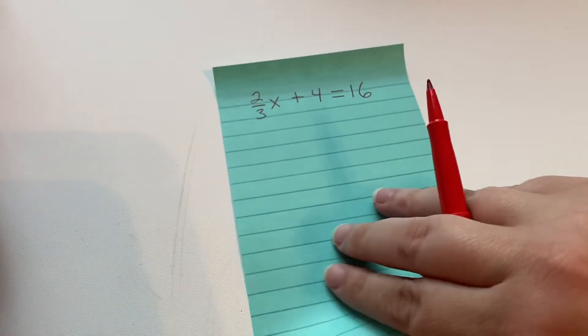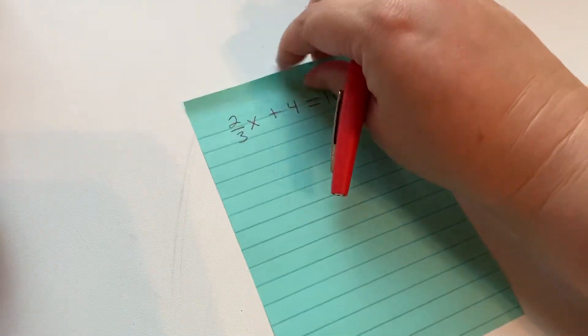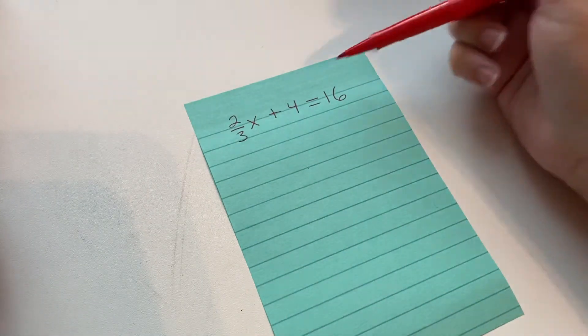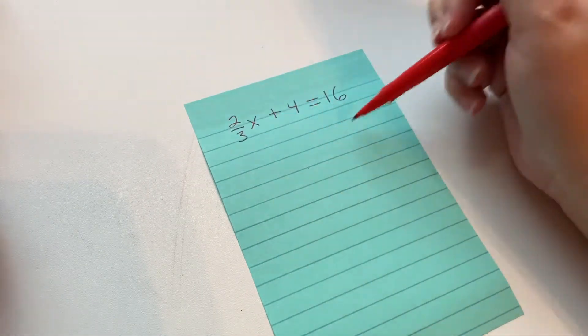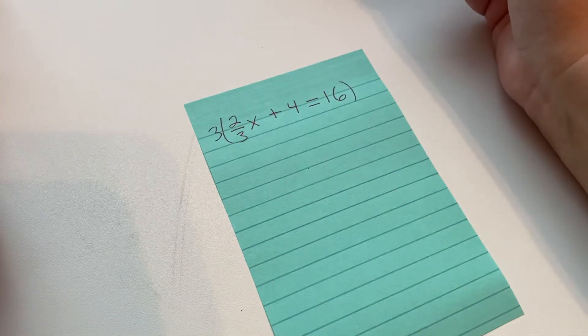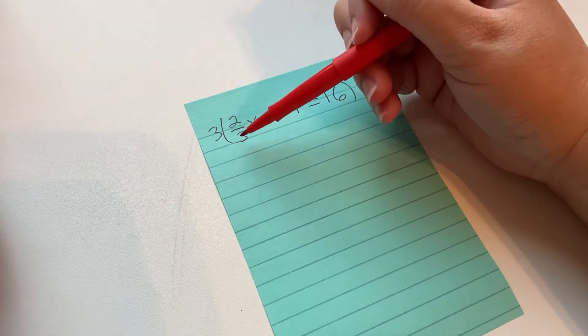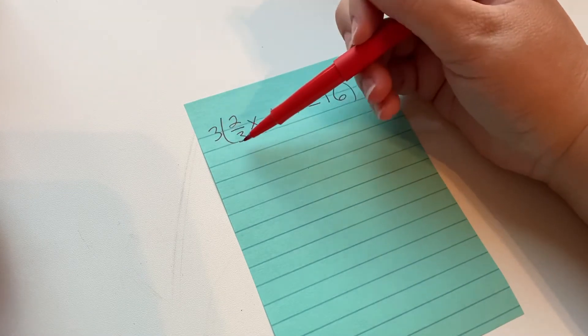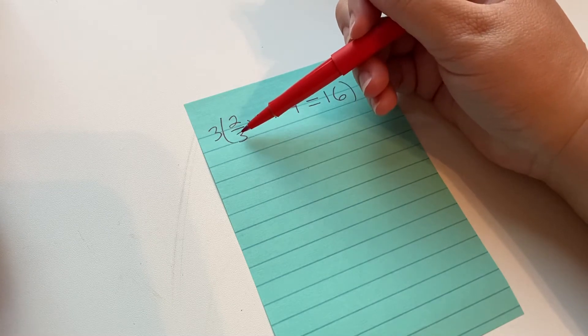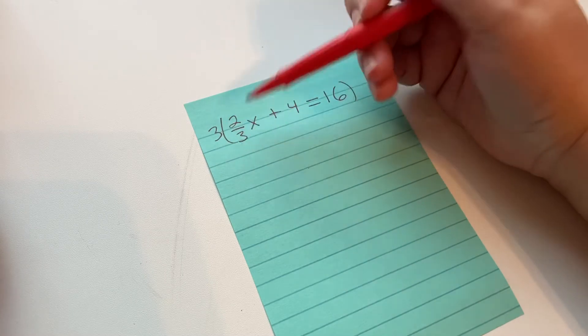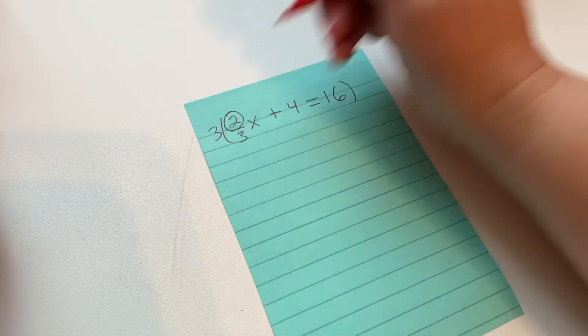What about if there's not a 1 on the top of the fraction? So it will be slightly different. So we still want to multiply the whole equation by the denominator. This way when you do that you're going to get when you multiply the fraction by the denominator you're going to get a whole number. So 3 times 2 thirds is 2. So we have 2x.